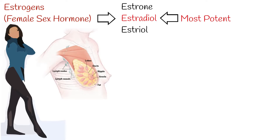Effects of estrogens on the body — Breast: Estrogen is responsible for developing breast and mammary gland tissue, causing breast development during puberty in females. Estrogen is also responsible for the development of mammary ducts during puberty and pregnancy, and functions to secrete breast milk in postpartum lactation.